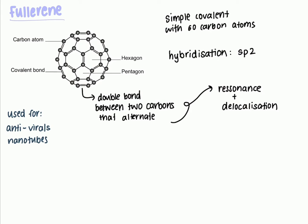Graphite is a very good electrical conductor. This is because it has three carbons bonded to another one and that leaves it with one delocalized electron. This delocalized electron allows graphite to conduct electricity.